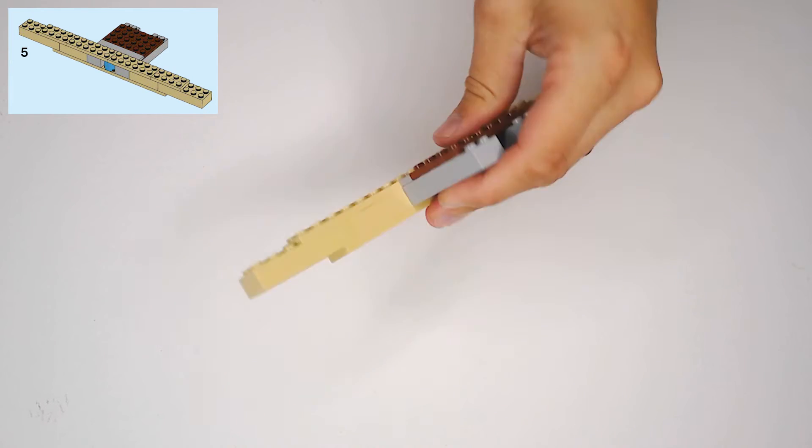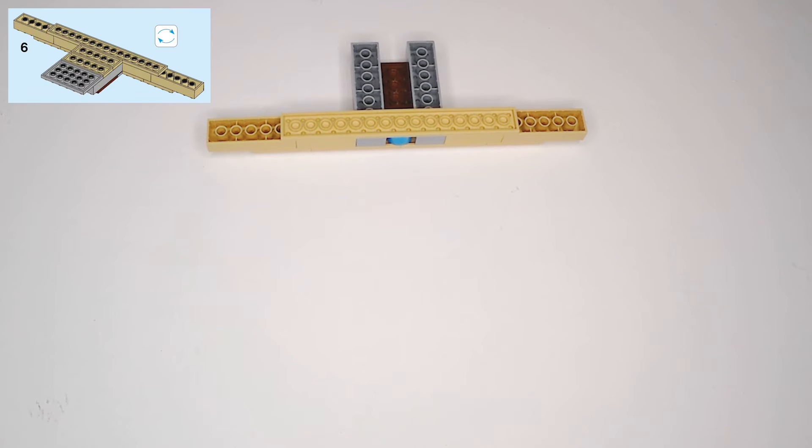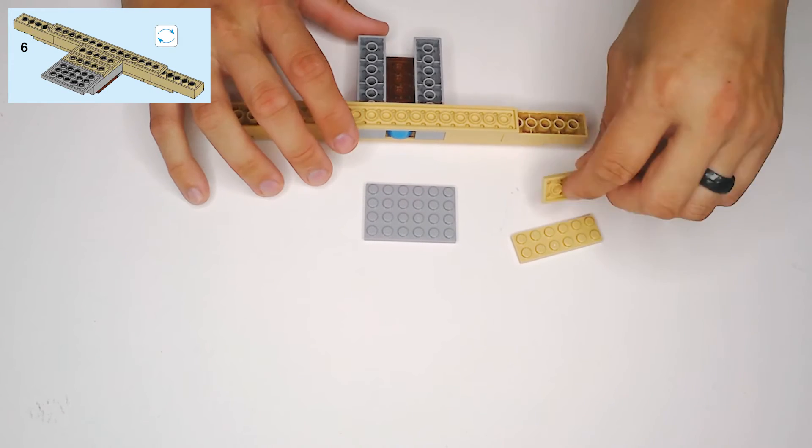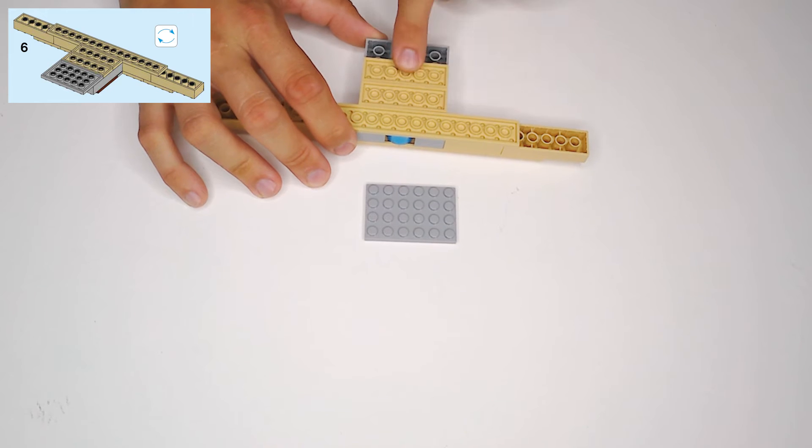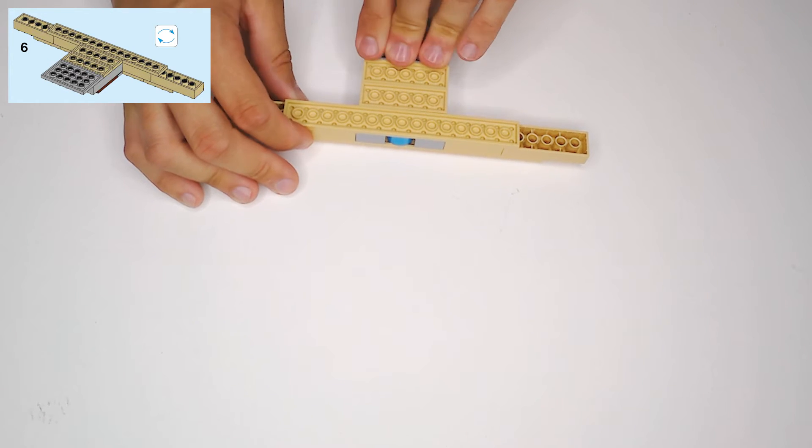Now in step six, we need to flip this whole assembly over, and we need two of the tan 2x6 plates, and we need a 4x6 light gray plate, and underneath these light gray blocks, we're going to put the tan plates first, one after the other right here, flush against that long tan plate there.